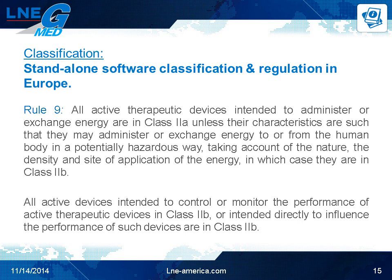Rule 9 states that all active therapeutic devices intended to administer or exchange energy are in Class 2A, unless their characteristics are such that they may administer or exchange energy to or from the human body in a potentially hazardous way — taking account of the nature, density, and site of application of the energy — in which case they are in Class 2B. All active devices intended to control or monitor the performance of Class 2B active therapeutic devices, or intended directly to influence their performance, are also in Class 2B. Examples include radiotherapy planning systems used to calculate the dose of ionizing radiation to be administered to a patient, or insulin dosage planning standalone software.